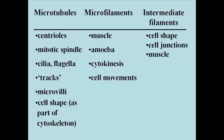Intermediate filaments are mainly involved in maintaining cell shape. They have no direct involvement in cell motility, but they can have an indirect role in cell movement, particularly in muscle contraction.